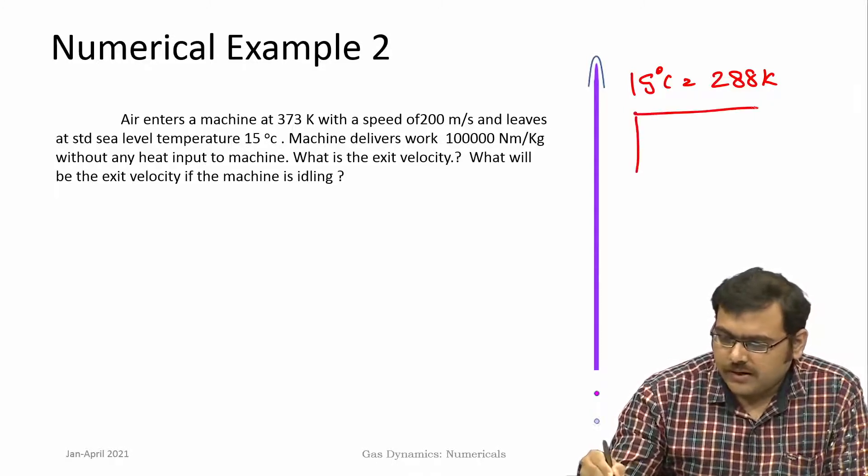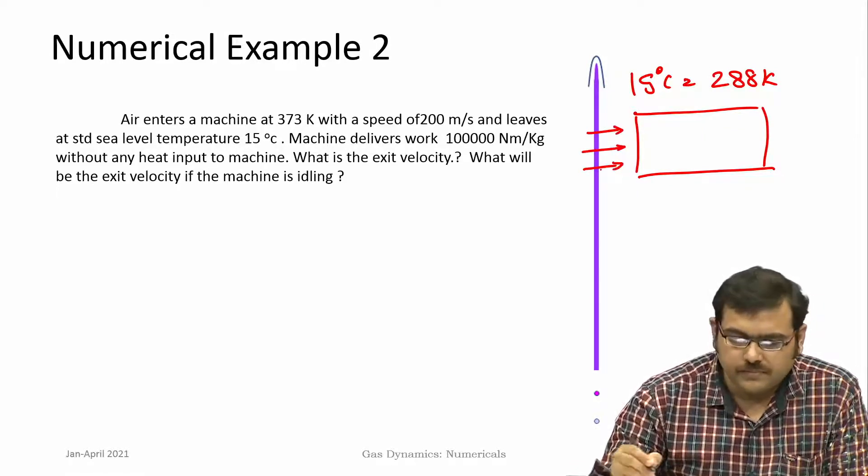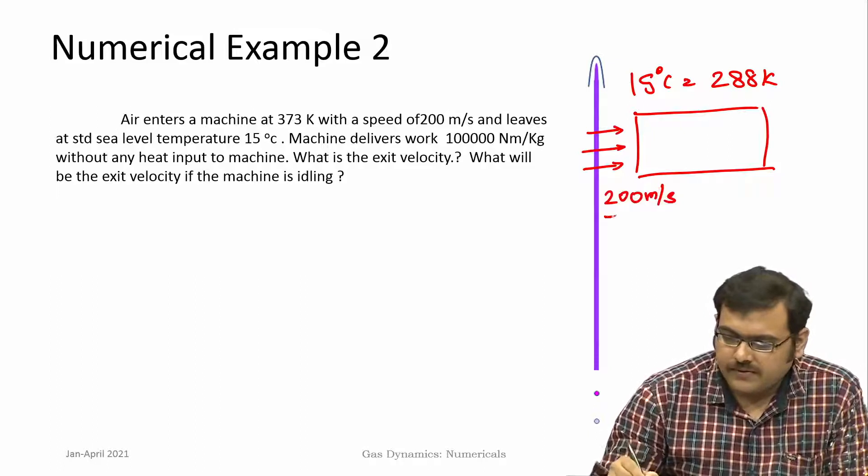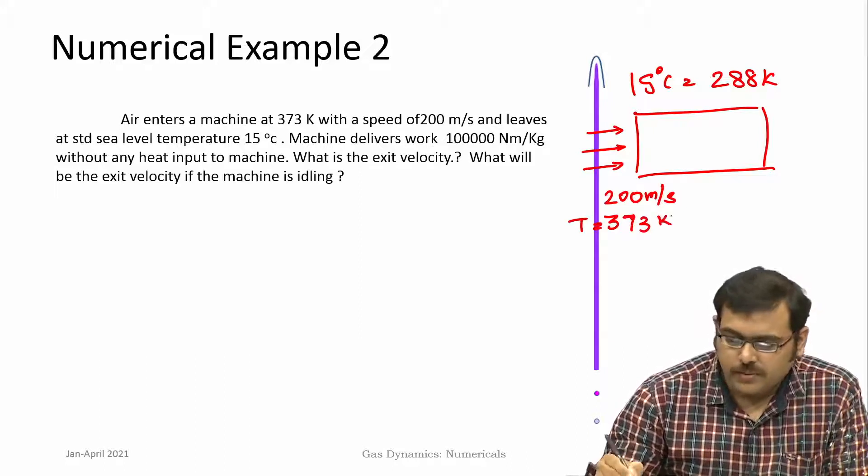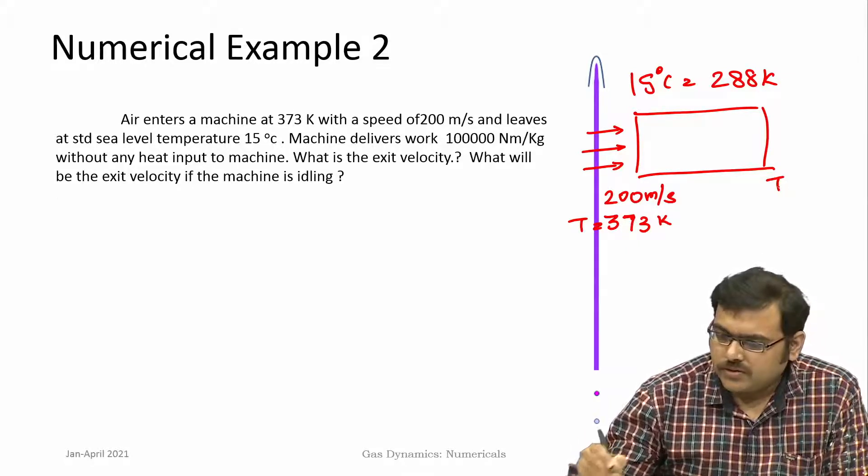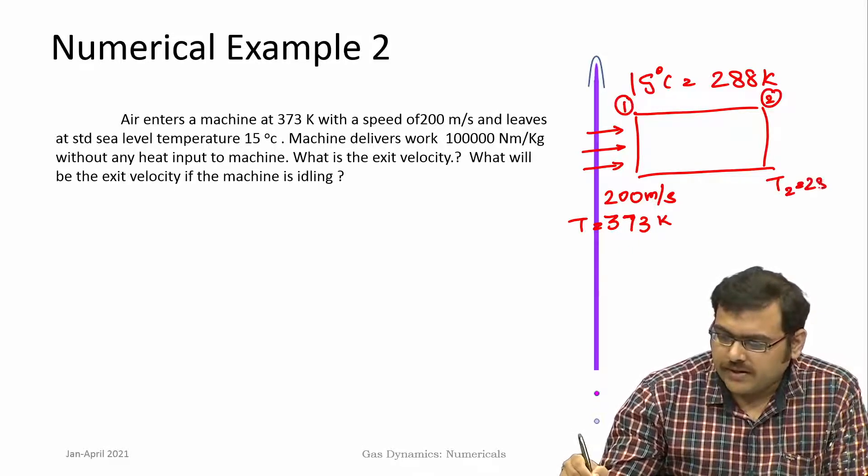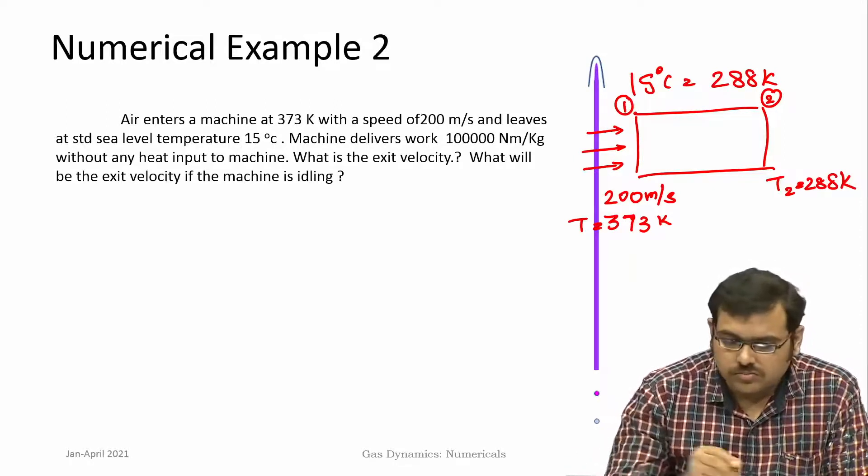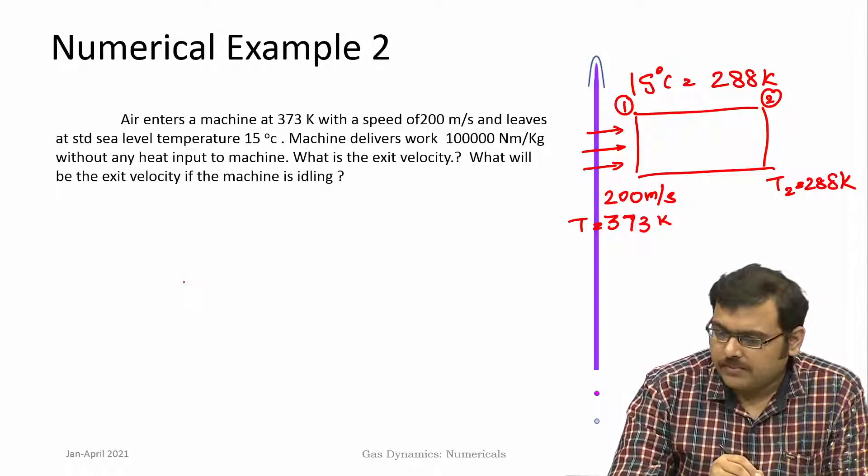This is given here. We draw a control volume around the machine. We know that air is input, it is coming in at 200 meter per second and 373 Kelvin is the temperature. At section 1 it leaves at section 2, this is 288 Kelvin. Now we have to calculate the exit velocity.